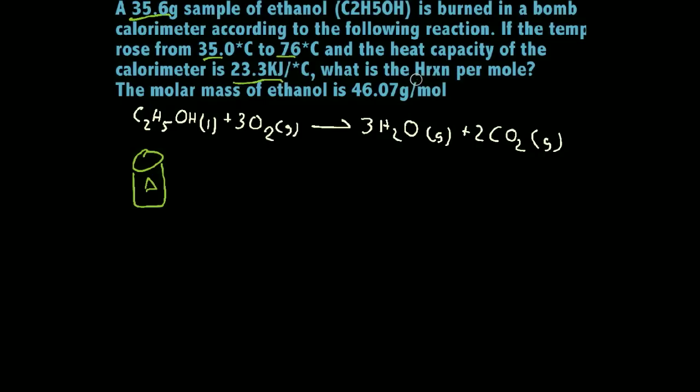They're wanting to know the heat reaction. This is an important detail, the amount of heat that's given off per mole of this ethanol. So they're putting 35.6 grams of ethanol inside this and heating it, and it rose from 35 to 76 degrees Celsius and the total heat capacity of this thing is 23.3 kilojoules. What's the amount of heat that's evolved or given off by doing this reaction?